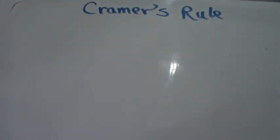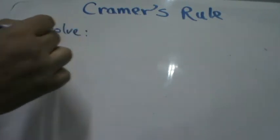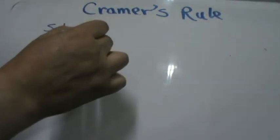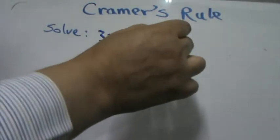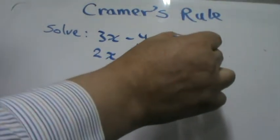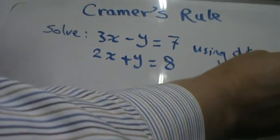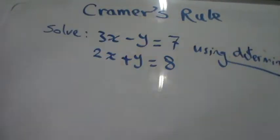Hi everyone. I would like to talk about Cramer's rule, or how to use determinants to solve a system of linear equations. For example, solve 3x minus y equals 7 and 2x plus y equals 8 using determinants, or using Cramer's rule.